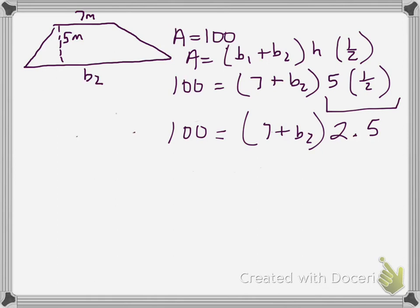I have 7 plus base 2 multiplied by 2 and 5 tenths, and that is all equal to 100. I want to keep getting closer and closer to isolating that variable. So the next thing I could get rid of would be this 2 and 5 tenths. How do you do that? Well, right now, 2 and 5 tenths is right against the parentheses here. And that means multiplication.